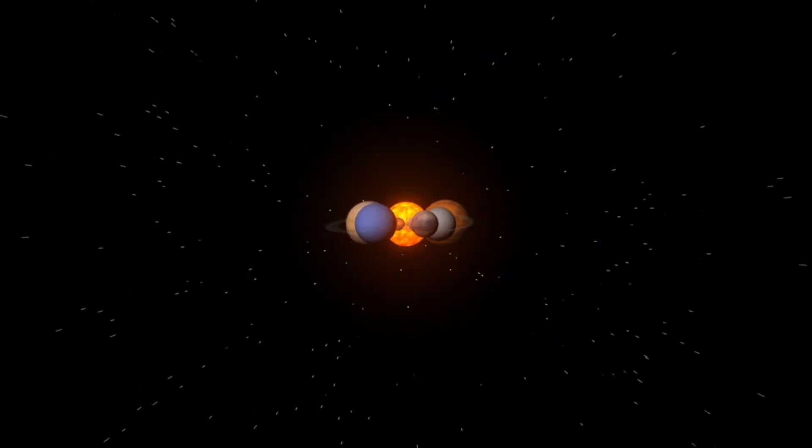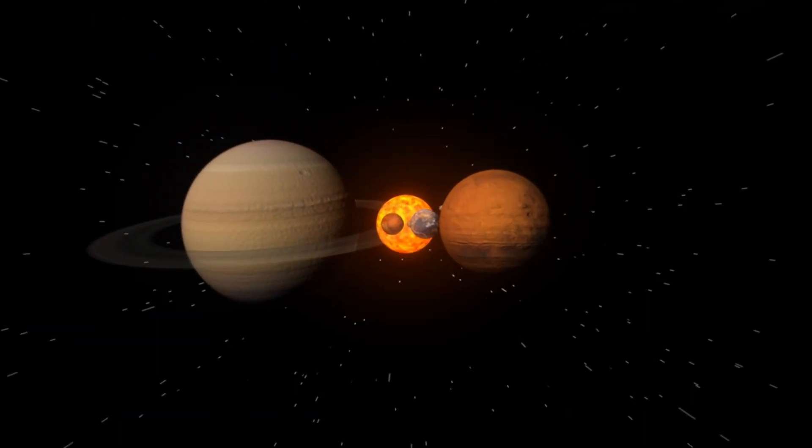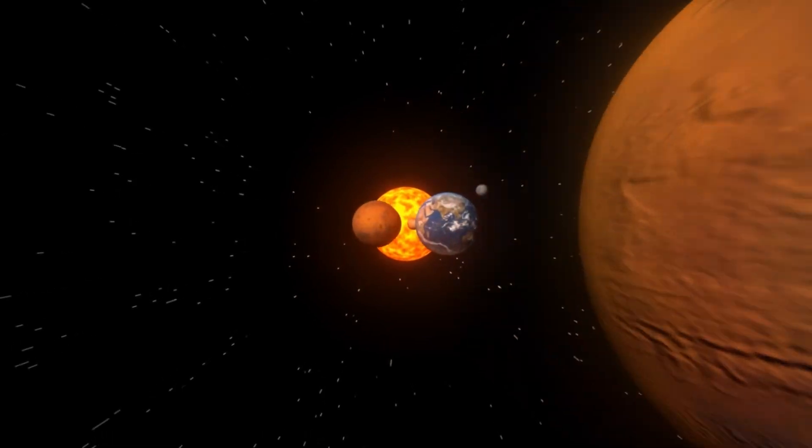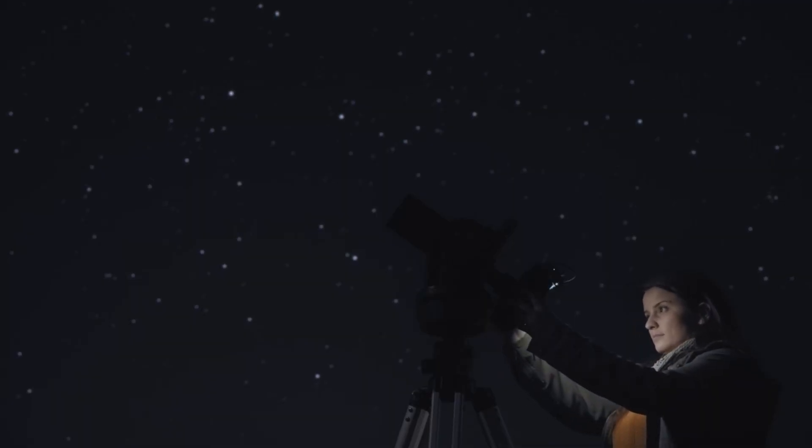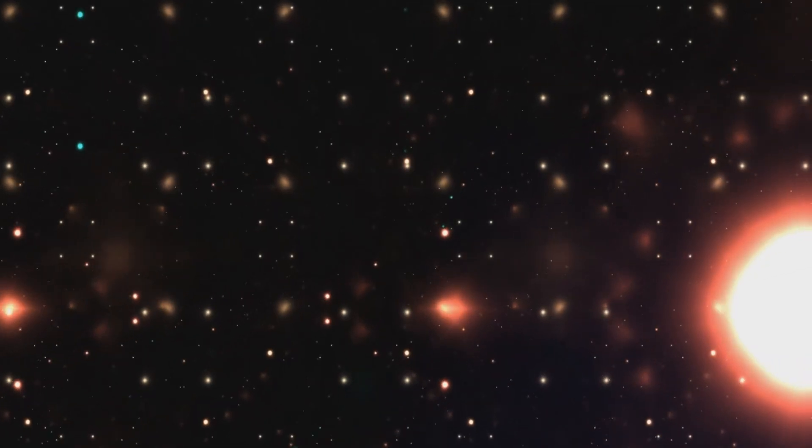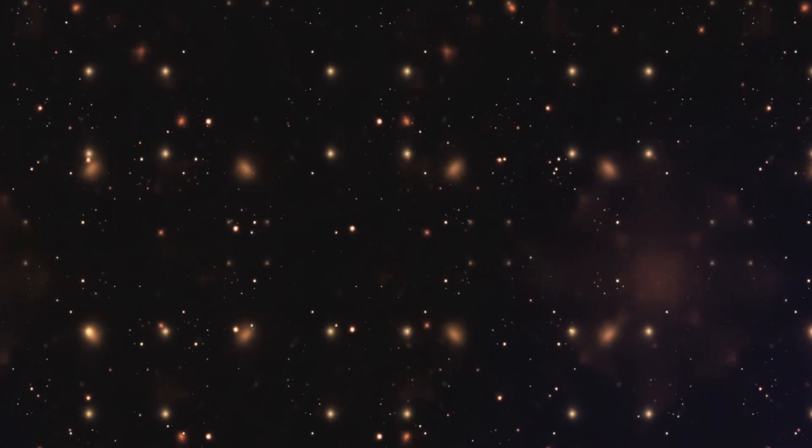It is also a part of the triple star system called Alpha Centauri. And although Proxima b's luminosity is very low, the system itself appears as one of the brightest constellations in the night sky, only behind two others called Sirius and Canopus.